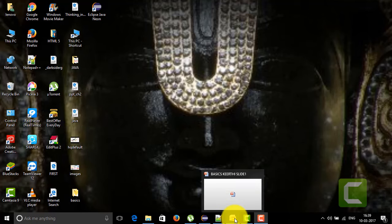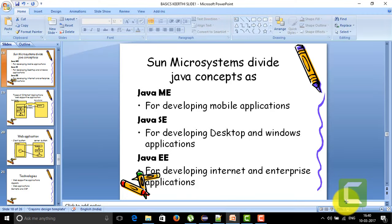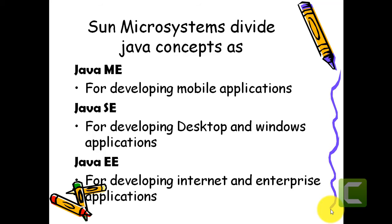Hi friends, welcome to the channel of Learning by Doing. Today we are going to talk about some more basic concepts in Java. Yesterday we talked about what Sun Microsystems division concepts are in Java — they divide the Java concepts into Java Micro Edition, Java Standard Edition, and Java Enterprise Edition. Now I'm going to talk about some more important points of Java, because by learning Java we have to get some software jobs, as these are all the entry-level questions in the software industry.